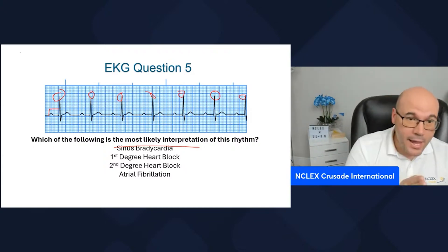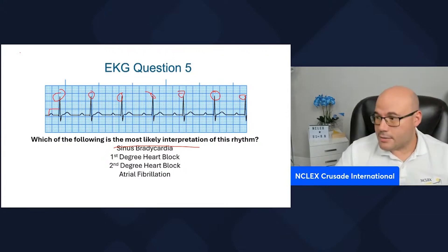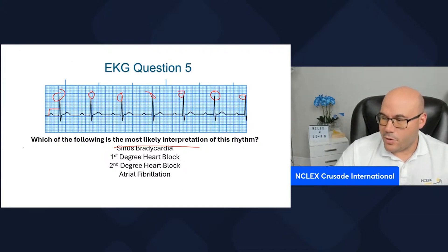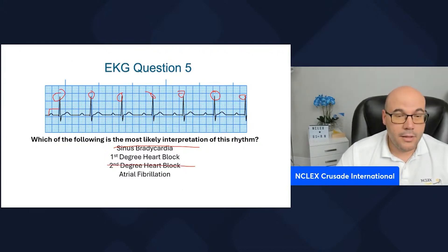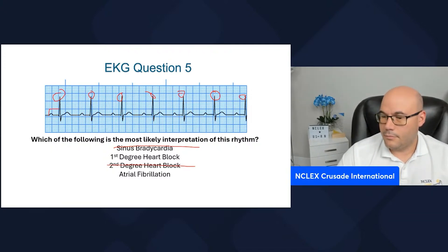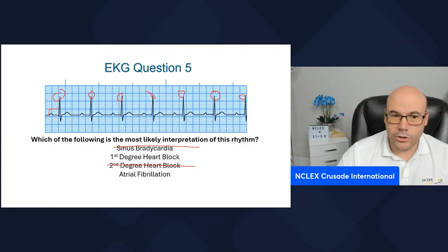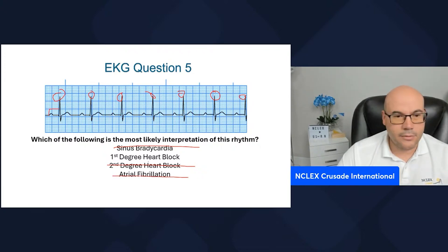We have a P and a QRS all the time, which means we don't have a second degree heart block, because a second degree heart block is missing QRS complexes. And I don't see multiple P waves, and if I don't see multiple P waves, it cannot be atrial fibrillation.